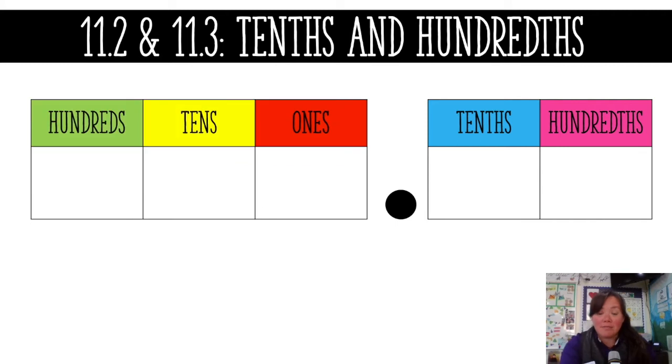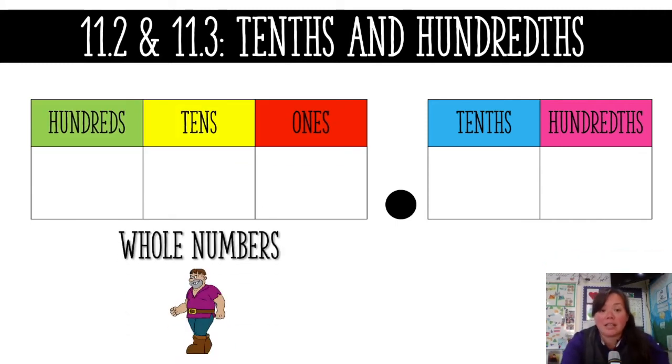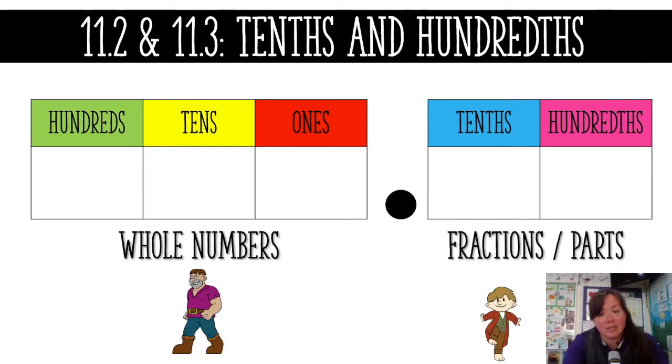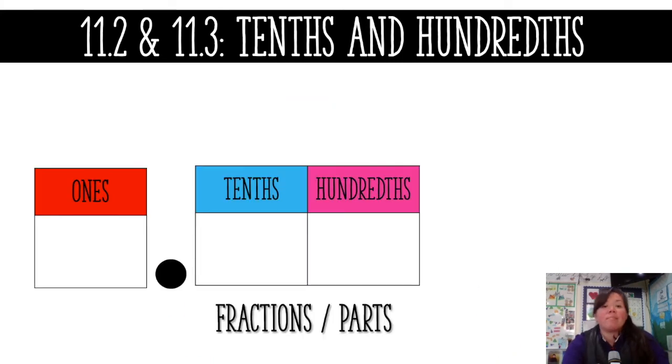If you remember yesterday, we talked about decimals and how on the left side of the decimal it is the whole numbers - it stands for those large giants, the big wholes. On the right side of the decimal is our fractions, our parts, the things that are divided up into tiny parts.